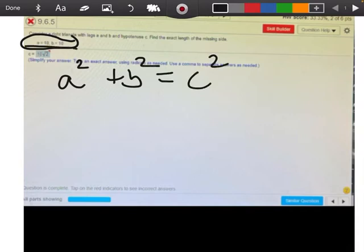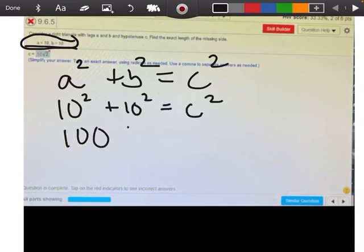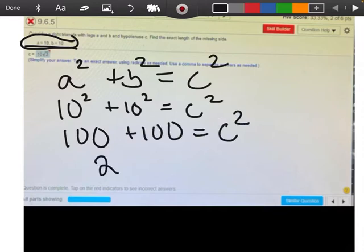They're telling us that both A and B are going to be 10. So I'm going to go 10 squared plus another 10 squared equals C squared. So this is 100 plus another 100 equals C squared. So 200 equals C squared.